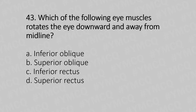Question 43: Which of the following eye muscles rotates the eye downward and away from the midline? Option A: inferior oblique. Option B: superior oblique. Option C: inferior rectus. Option D: superior rectus. The answer is Option B: superior oblique.